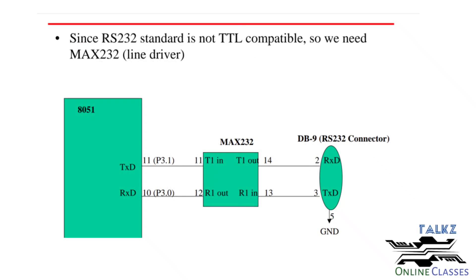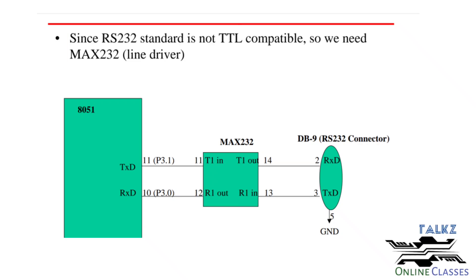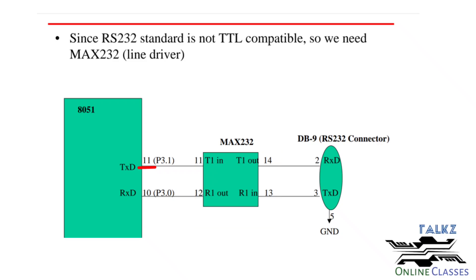RS-232 does not support TTL voltage levels, so to interconnect the 8051 and DB9 connector, a voltage level converter is used. The commonly used voltage level converter is the MAX232, which converts between 8051 TTL voltage levels and DB9 RS-232 signals.